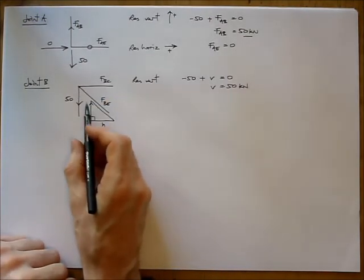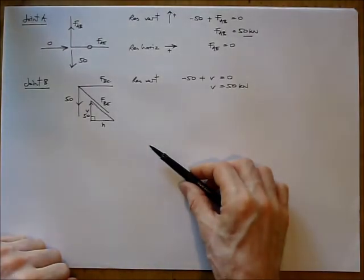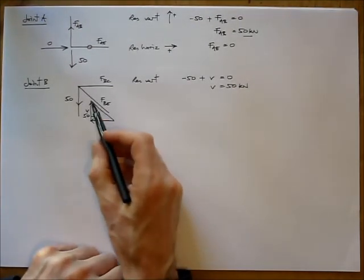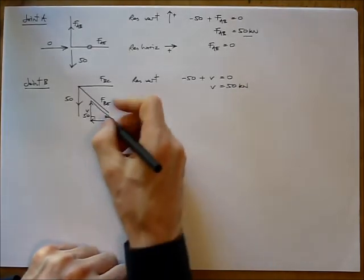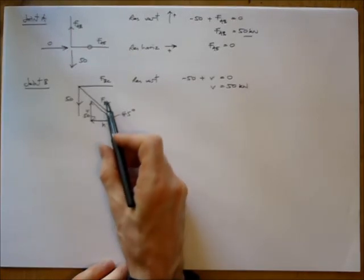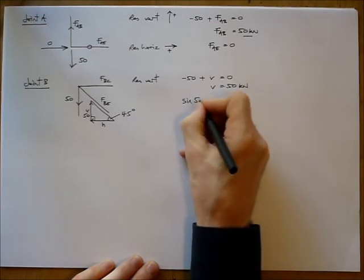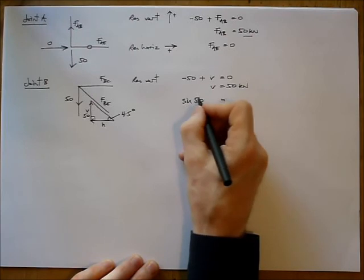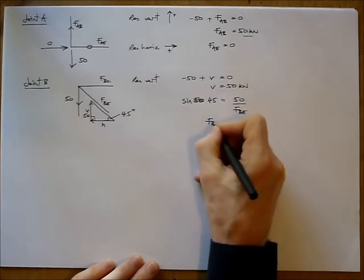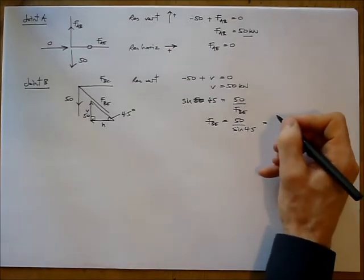Now if I know that V is acting upwards by 50, then I also know that FBE must be acting upwards. So if that's acting up and to the left, then H must also be acting to the left. And I can use the triangular forces here to work out both H and FBE. Because I know that this angle here is 45 degrees. So I'm just going to use trigonometry or Pythagoras to do this. Let's work out FBE first. So I need a relationship between this side of the triangle and this side of the triangle. So the sine of 45 equals 50 divided by FBE. Therefore FBE equals 50 over the sine of 45, which just so happens to be 70.7 kN.